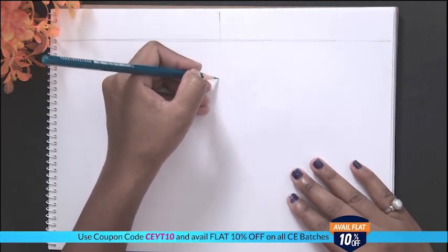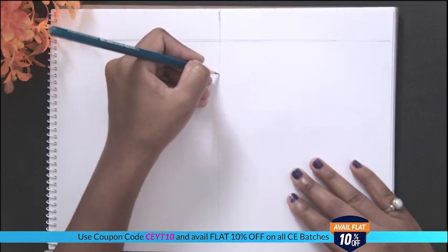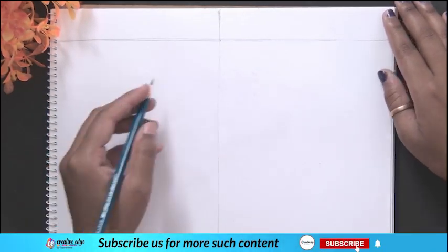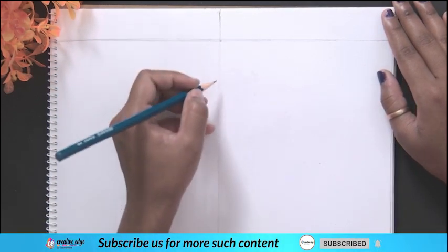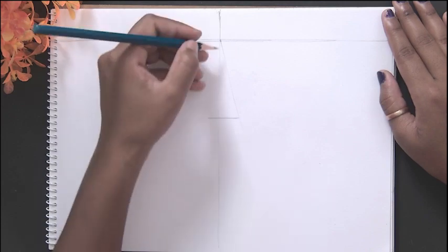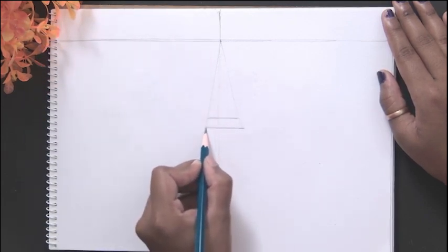First of all, we need to create the horizon line, which is also known as eye level. This vertical line is called the line of station. Basically, it is the position of the viewer.